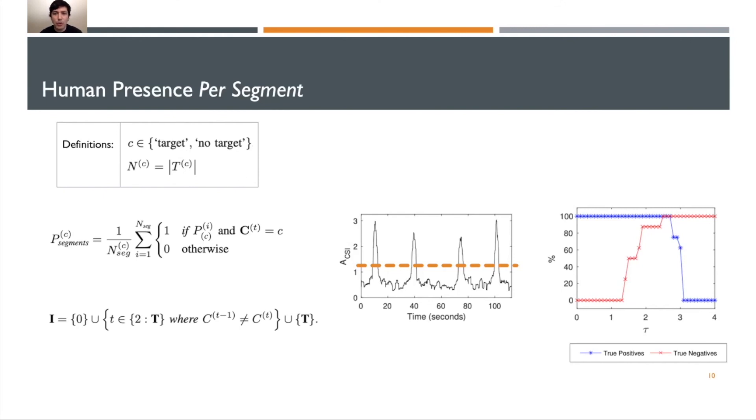As such, we can simplify our previous method with PC samples into PC segments, as shown in this equation. This time, for all segments labeled as having a target, our model should predict at least one of these samples as having a target. Using this method, we can see in the figure to the far right that there are values of tau, right here, where both true negatives and true positives are 100%.